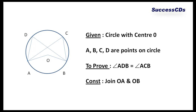I have to prove angles in the same segment are equal. That means if I look at arc AB, the angles subtended by arc AB are angle ADB and angle ACB. These two angles have to be equal to each other.